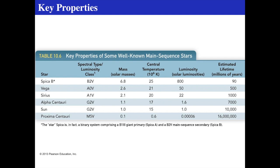Going from Vega to Sirius, the mass drops by only about half a solar mass, the central temperature doesn't drop too much, but the luminosity drops by a factor of two and the estimated lifespan jumps by a factor of two. Alpha Centauri, similar to the Sun, is about 1.6 times the luminosity of the Sun, so its lifespan will be shorter. The Sun's total lifespan is about 10 billion years. Proxima Centauri, an M-type dwarf with about a tenth of the Sun's mass, has an incredibly tiny luminosity — about six thousandths of one percent of the Sun — and will live about 16 trillion years.